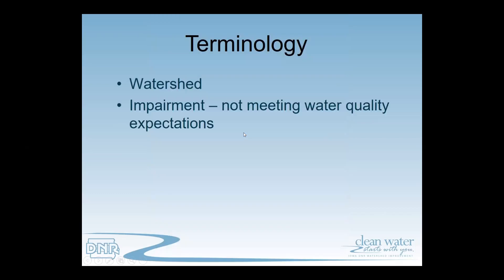The next term is impairment. An impairment is any time we are not seeing water quality expectations met in a particular water body. We have water quality standards — a set of expectations for that lake or stream. We take monitoring information, compare it against those expectations, and when an expectation is not being met, that is an impairment. It goes on the impaired waters list, and our job is to go into those watersheds and figure out what's going on.